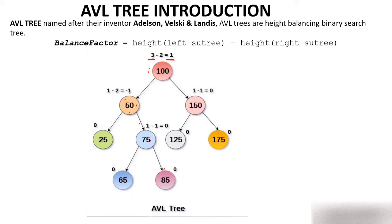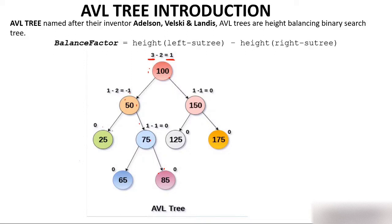Now let's calculate the balance factor of node 50. On the left you can go only 1 level, so left height is 1. On the right you can go 2 levels, so right height is 2. Balance factor = 1 minus 2 = -1. For a leaf node, there is no left or right child, so the balance factor of a leaf node is always 0. If a node has one element on the left and one on the right, 1 minus 1 = 0. This is how balance factor is calculated.